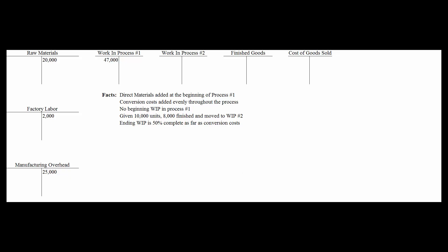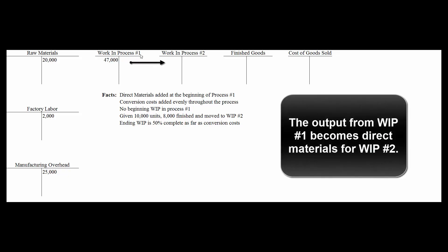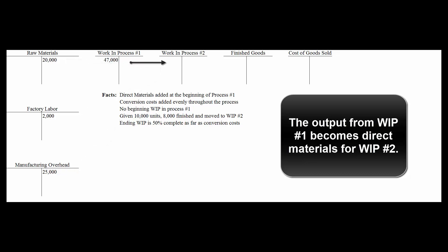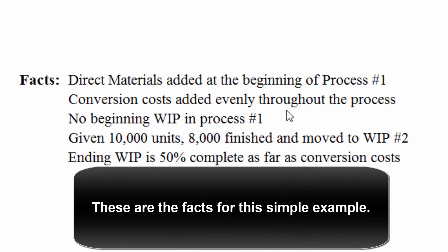Instead of waiting until the very end when the product is completely done, the output from work in process number one becomes the beginning direct materials for process number two. We may add more materials, labor, and overhead in process two, but the output of process one is the input for process two. Direct materials are added at the beginning of process one; conversion costs are added evenly throughout. Assuming no beginning work in process, let's say we start 10,000 units, finish 8,000, move those to work in process number two, and have 2,000 units in ending inventory that are 50% complete as far as conversion costs go.